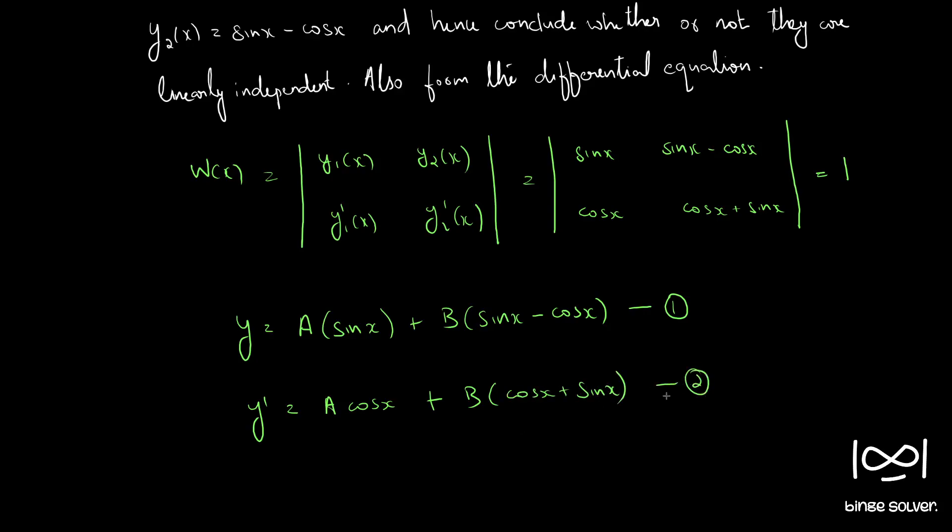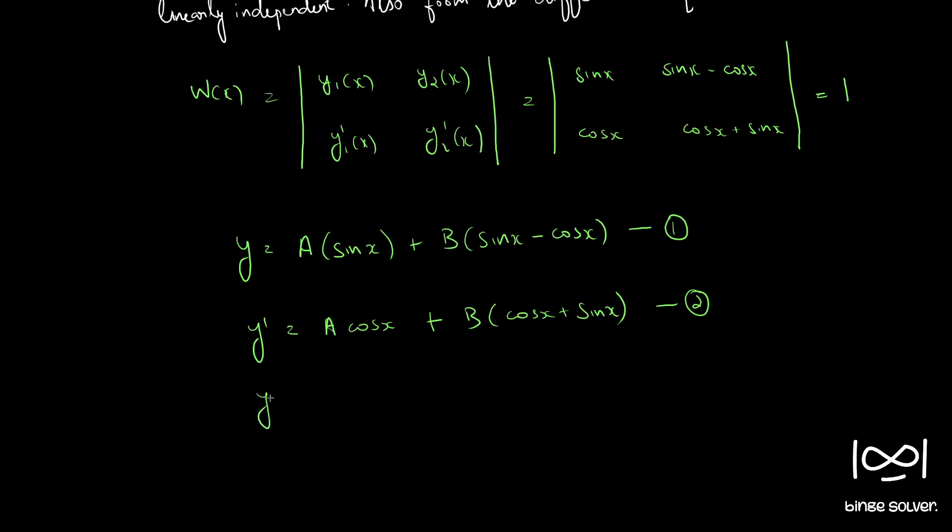So this is our equation 2. Now y double dash is equal to, so differentiating, I am just differentiating with respect to x, a into minus sin x plus b into minus sin x plus cos x. So this is equation 3.